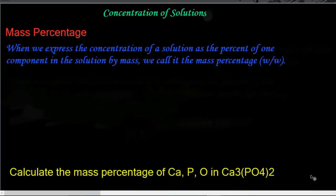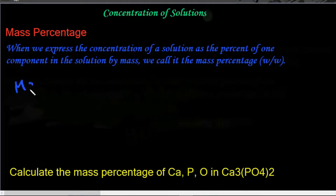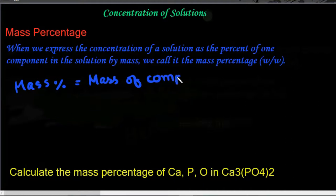The first way of expressing the concentration of a solution is mass percentage. When we express the concentration of a solution as the percent of one component in the solution by mass, we call it mass percentage. It is represented by w divided by w. Mathematically, mass percentage of component A is equal to mass of component A in the solution divided by total mass of the solution, into 100.